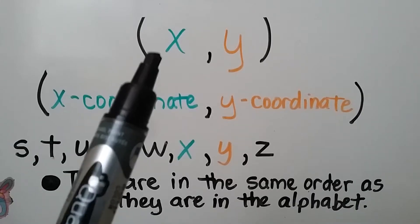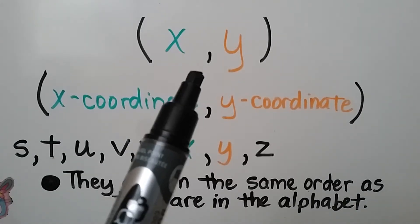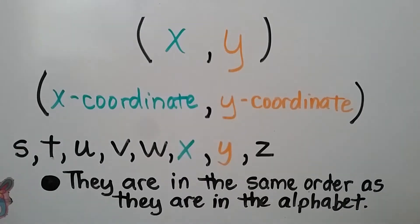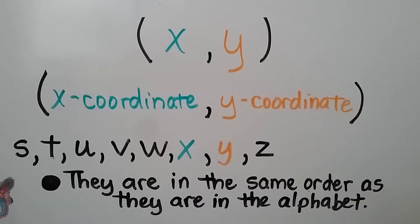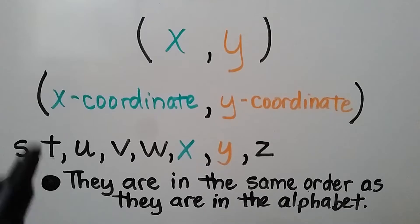In the parentheses, we have an x, then a comma to separate them, and then the letter y. We have the x-coordinate, then the y-coordinate. And we can remember that the x is first and then the y is second because they're in the same order as they are in the alphabet.